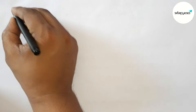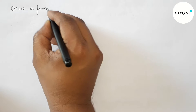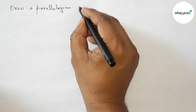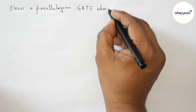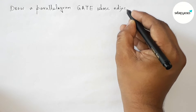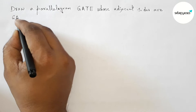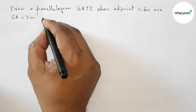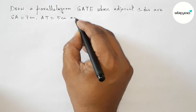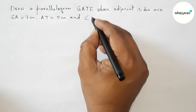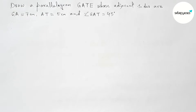Hi everyone, welcome to Essay Share Classes. Today in this video we have to draw a parallelogram GATE whose adjacent sides are GA equal to 7 centimeter, AT equal to 5 centimeter, and given one angle GAT equal to 45 degrees, in an easy way. Please watch the video till the end. So let's start.